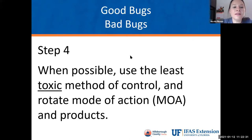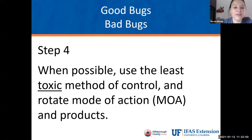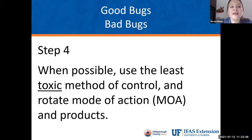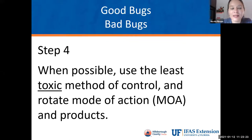When possible, use the least toxic method of control and rotate modes of action and products. A mode of action relates to the active ingredient of different products and how they work on different stages of insect life cycles. Some least toxic options include neem oil, diatomaceous earth, boric acid, soap and water, insecticidal soaps, and horticultural oils. BT is also a good one — there are many different kinds. Even with neem, there are different active ingredients, so not all neem oils are the same.